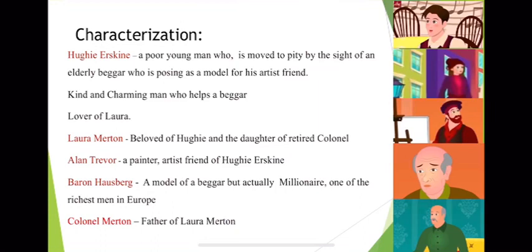Now let's look at the characterization. The characters in this short story: Hughie Erskine is the main character, or the protagonist. Hughie is a poor young man who is moved to pity by the sight of an elderly beggar posing as a model for his artist friend. He is a kind and charming man, and he is also a lover of Laura Merton.